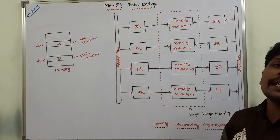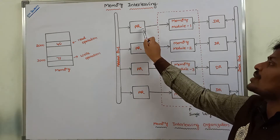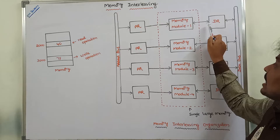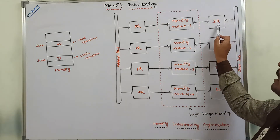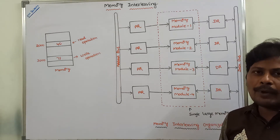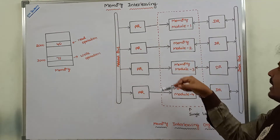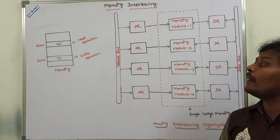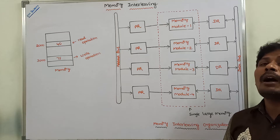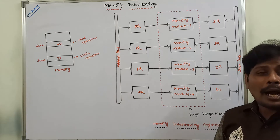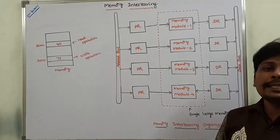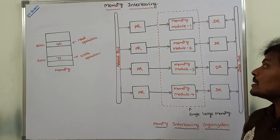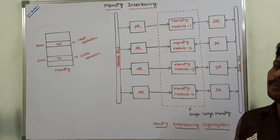To summarize: the address register has unidirectional communication between the address bus and the address register, and also between the address register and the memory modules. The data register has bi-directional communication between the data register and the data bus, and also between the data register and the memory modules.